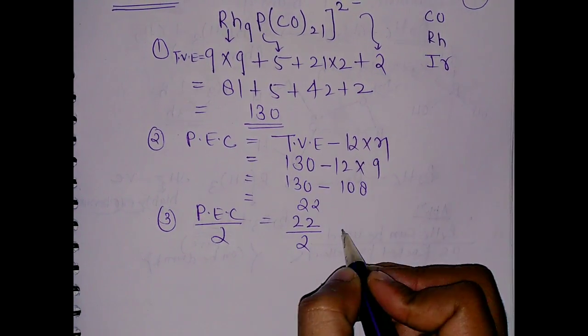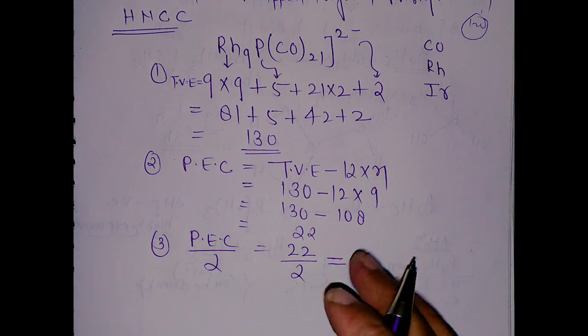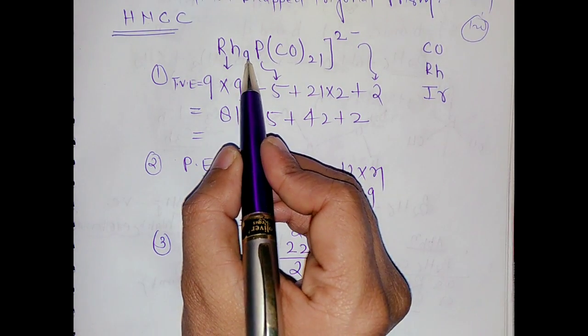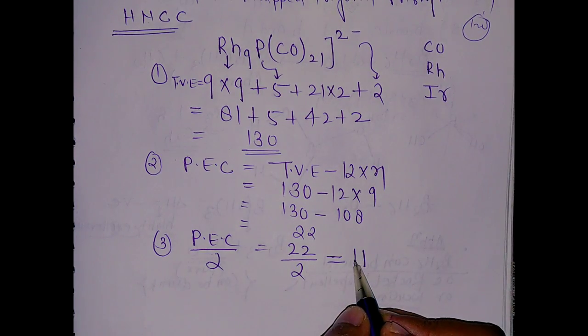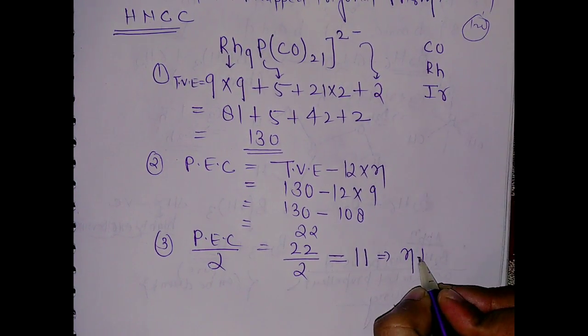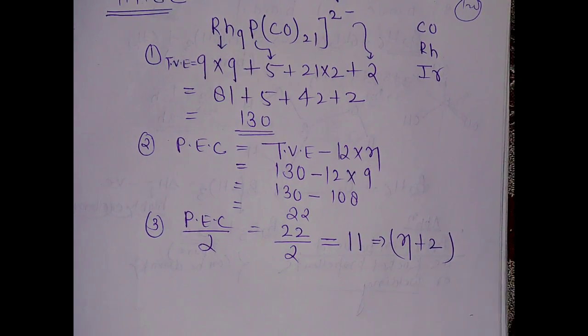In the third step, you have to do PEC divided by 2, so 22 divided by 2 gives 11. You have to tell n+1, n+2, or n+3. We have 9 metal atoms and we calculated 11, so this is n+2.